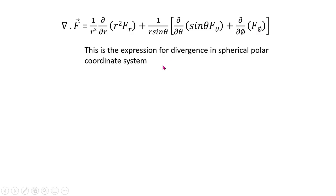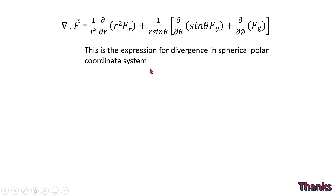In this way, in this lecture we have seen what divergence is, and we have obtained the expression for divergence in the general curvilinear coordinate system, in the Cartesian coordinate system, in the cylindrical coordinate system, and in the spherical polar coordinate system. In the next lecture we will see the curl operation. That's all, thank you.